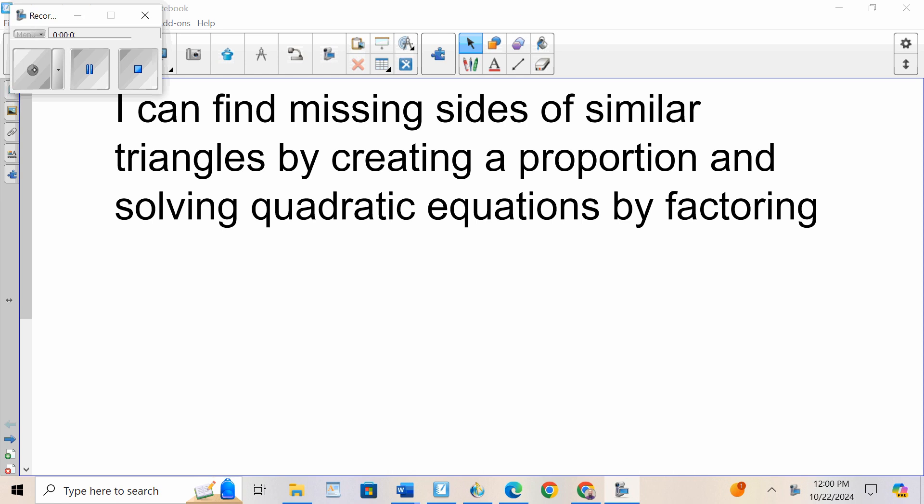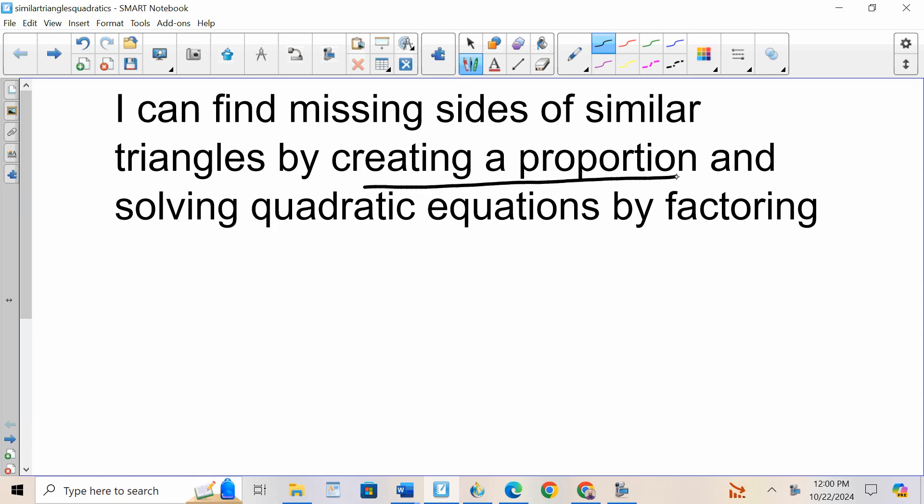Hello everybody, today I can find missing sides of similar triangles by creating a proportion, meaning a straight up proportion, candy corn, or hill sass, and then solving my quadratic equations by factoring. A lot of prerequisites for this lesson.